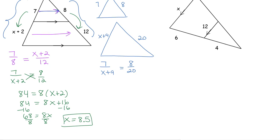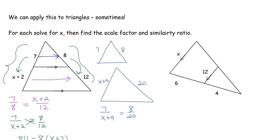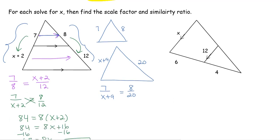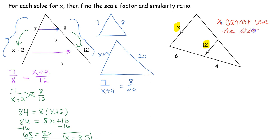So we could use the method we knew before by separating into two triangles — that's going to work every single time — or we could have used the shortcut. Now, we said we can only use the shortcut sometimes. Anytime the base of the triangle is involved, you cannot use the shortcut. So we cannot use the shortcut when the bases of the triangle are being used.